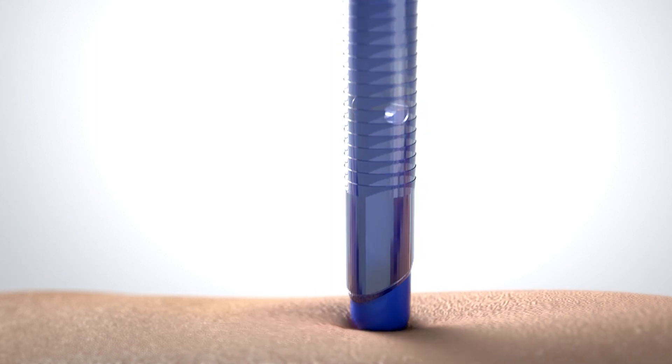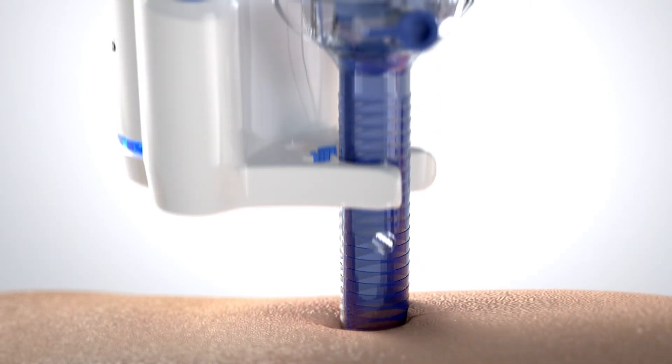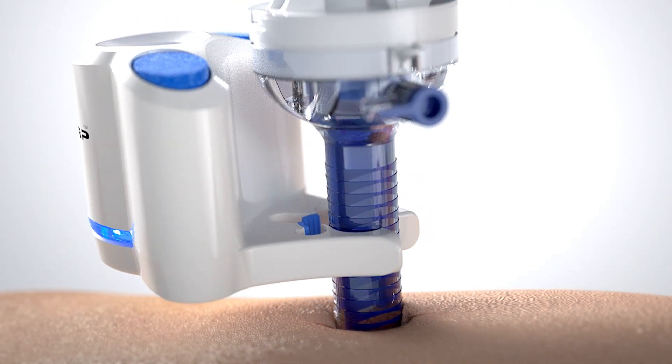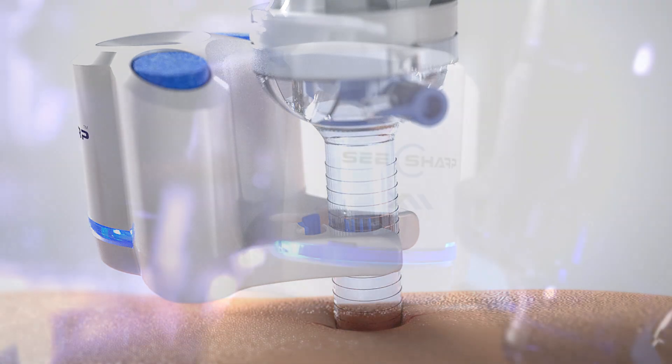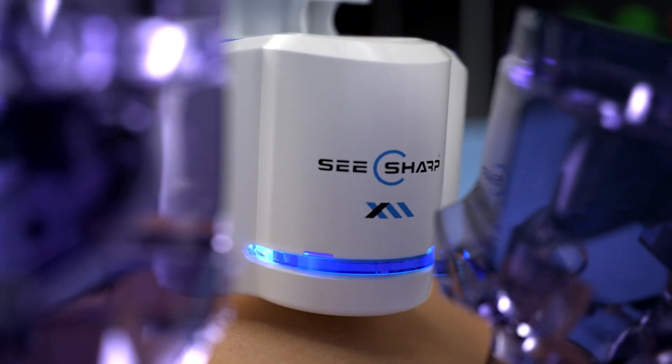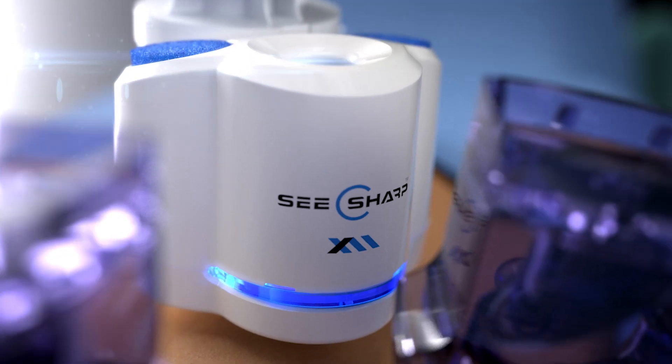Next, insert the combined trocar and C-Sharp into the patient. The same attachment technique is used for trocars already placed in a patient. The C-Sharp is now conveniently located within the surgical field and ready for the duration of the procedure.